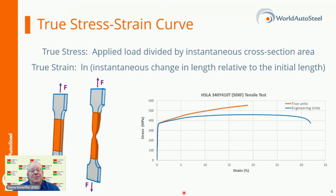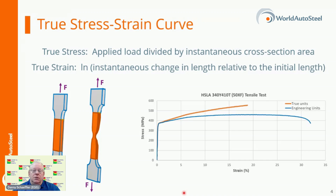True stress is determined by dividing the tensile load by the instantaneous cross-sectional area. True stress-strain curves obtained from tensile bars are valid only through uniform elongation, due to the effects of necking and the associated strain state in the calculations. When it comes to metal-forming simulation, inaccuracies are introduced if the true stress-true strain curve is extrapolated beyond uniform strain, and as such a different test is needed to minimize the degree to which extrapolation is required.